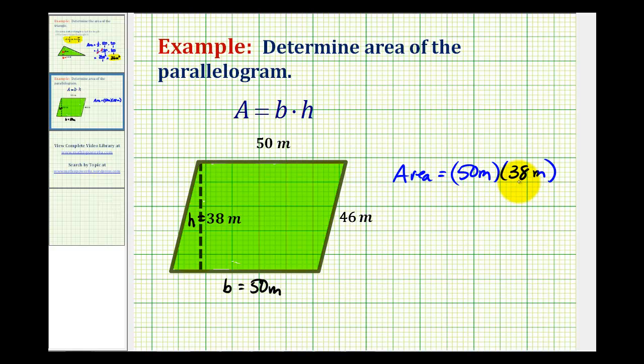And then to determine this product, we'll use the commutative property and change the order of this multiplication. So we'll have 38 times 50. Remember when multiplying by a multiple of 10, we can just put a zero in the ones place value, and then multiply by 5. So 5 times 8 would be 40. Carry a 4. 5 times 3 is 15. Plus 4. That would be 19. So our product is 1,900.